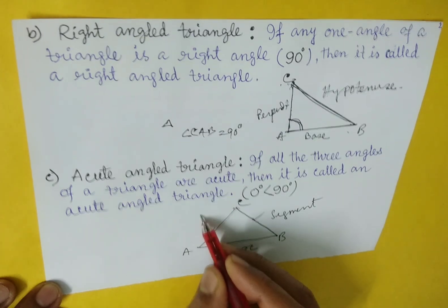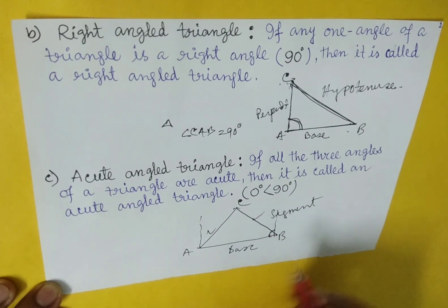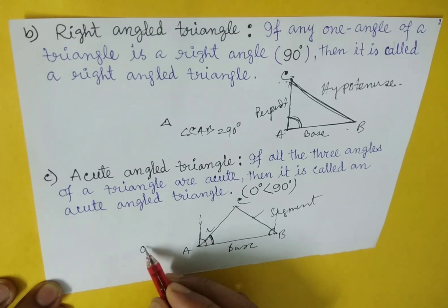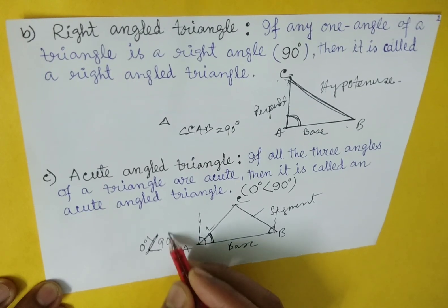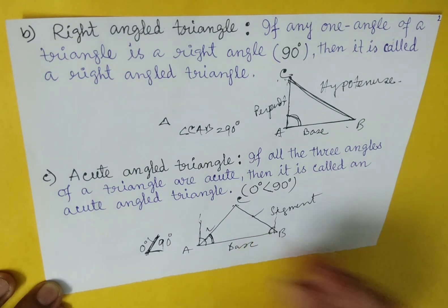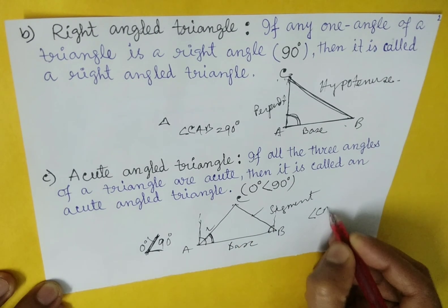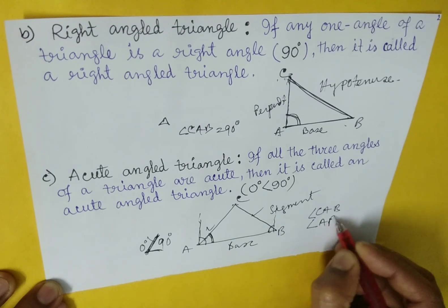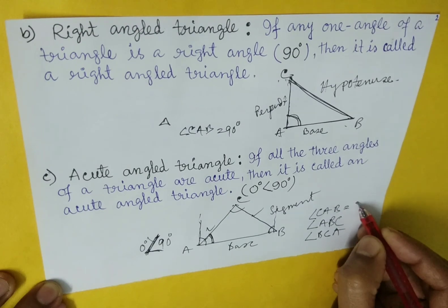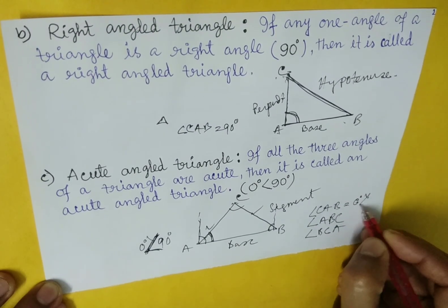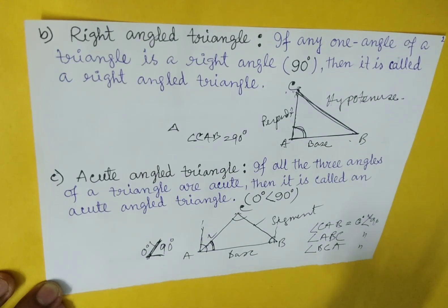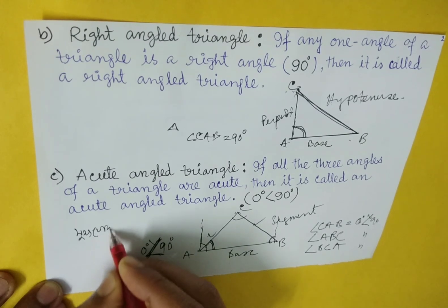In this figure, all angles are less than 90 degrees but more than 0 degrees. All three angles — angle CAB, angle ABC, and angle BCA — are greater than 0 degrees and less than 90 degrees. That is called an acute angle triangle. In Bengali, that is called Shukhokoni Tribhuj.